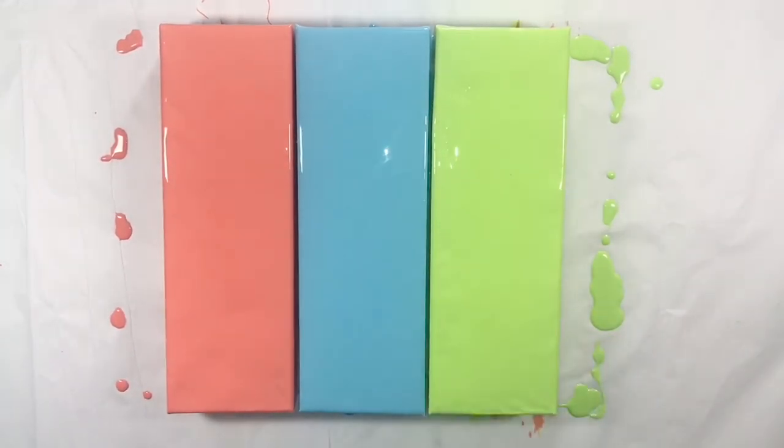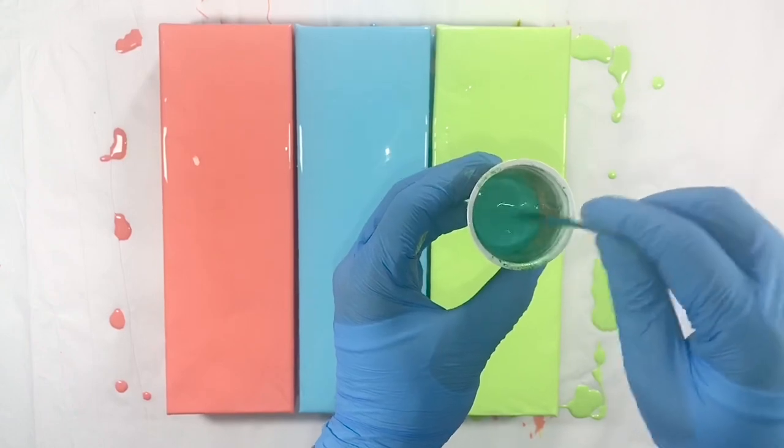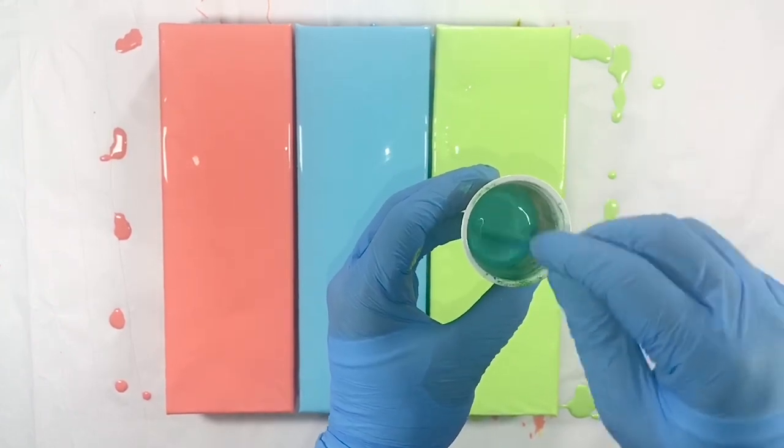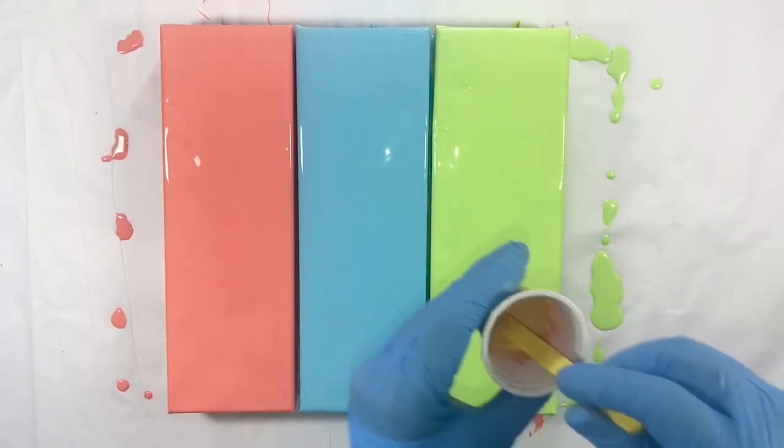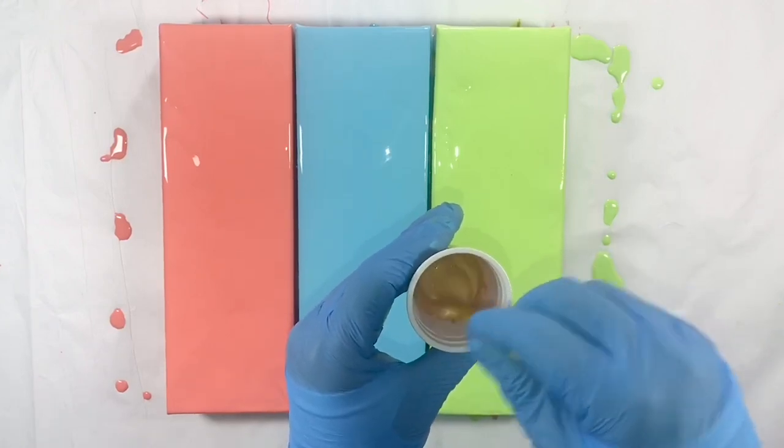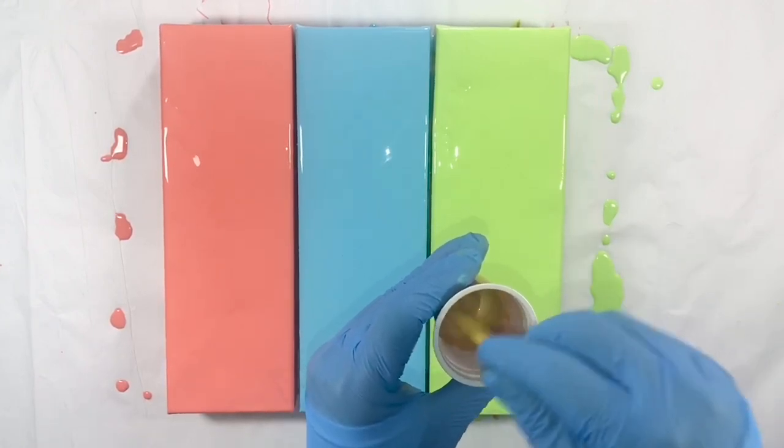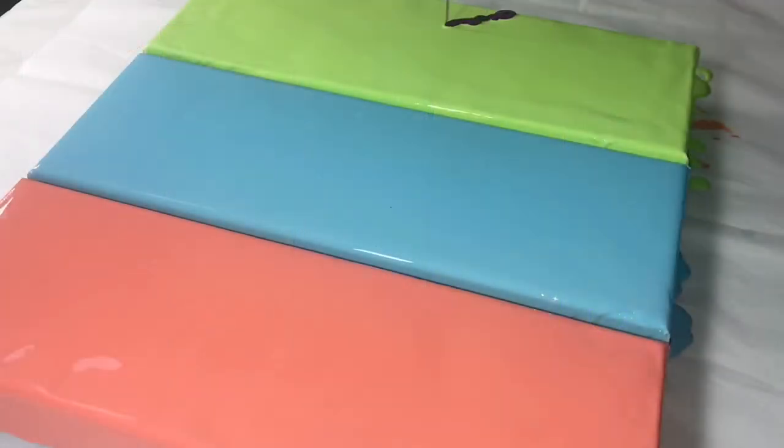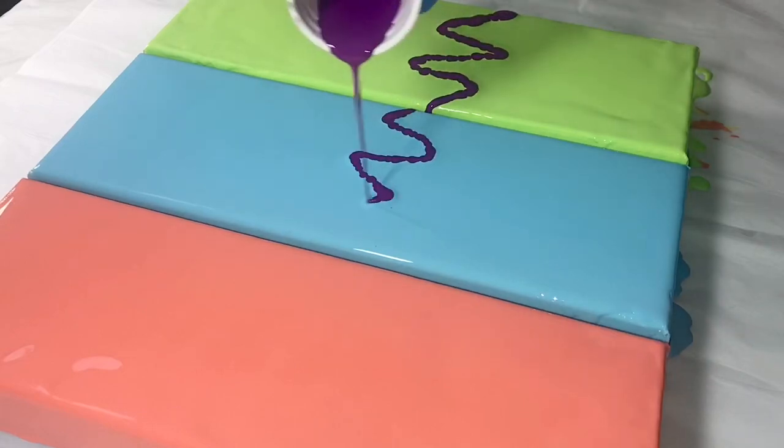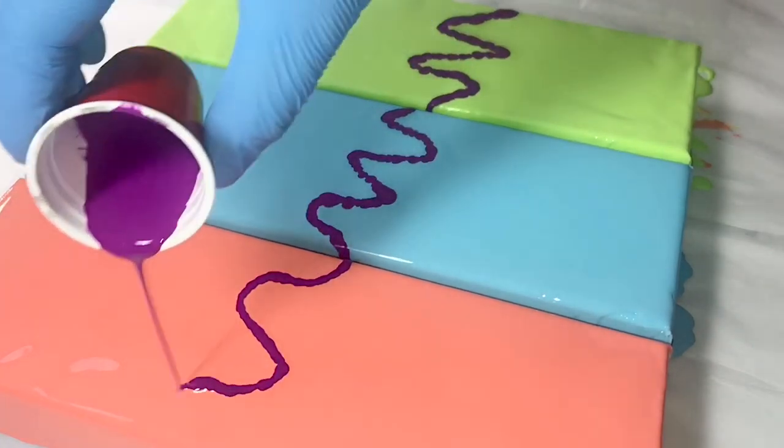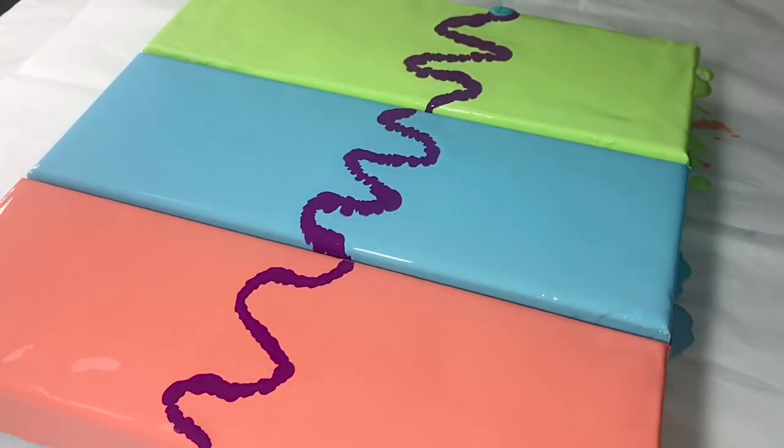I am adding a drop of 3 in 1 silicone oil to each of my dutch pour colors and giving a good stir. Now I am pouring my first dutch pour color, deep violet, in one streak on all the canvases at the center. On top of it, bright aqua green.